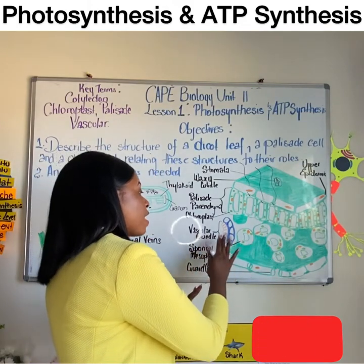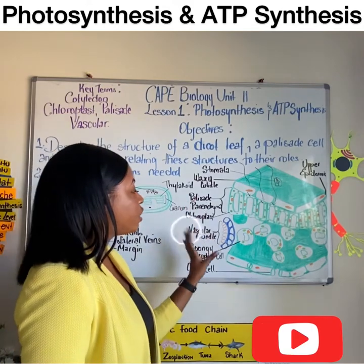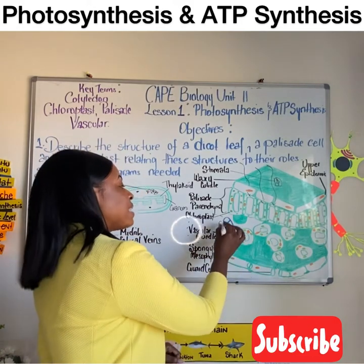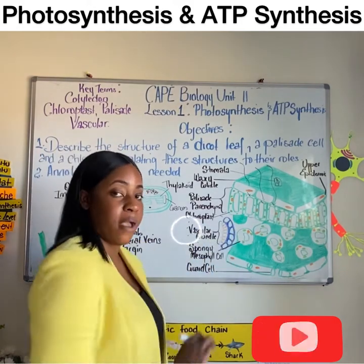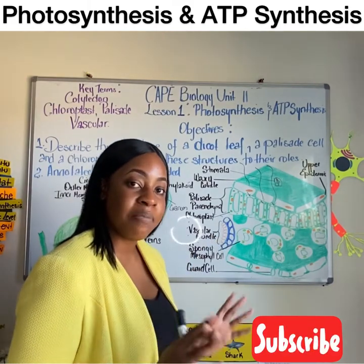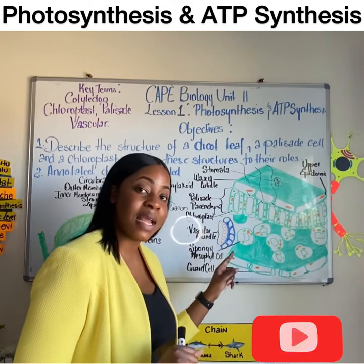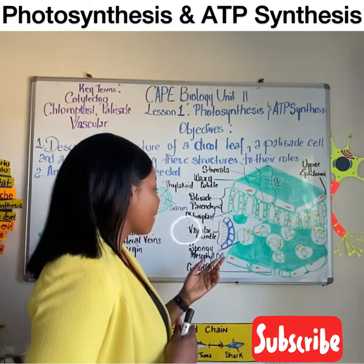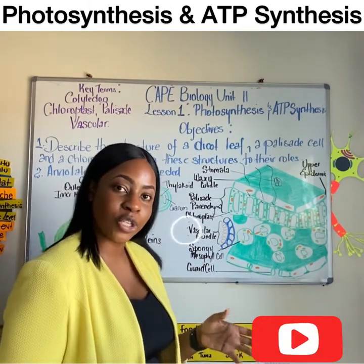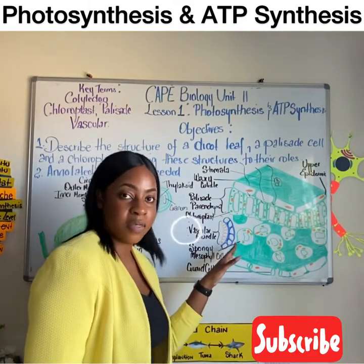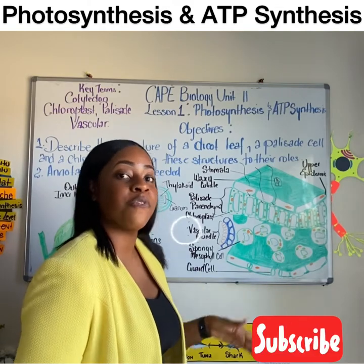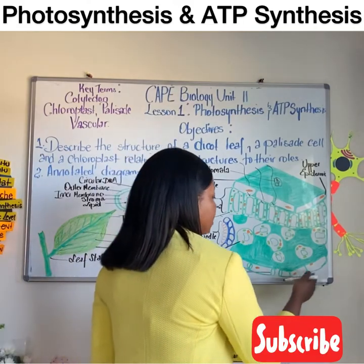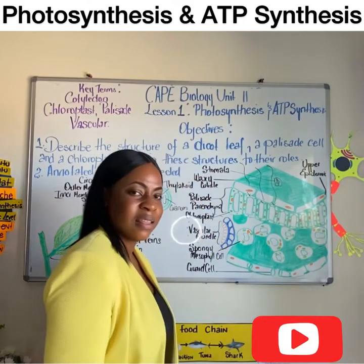The vascular bundles in dicot plants are arranged in a ring form, with xylem internal to the phloem. The xylem conducts water and mineral ions — water is needed as a reactant in photosynthesis, specifically for photolysis, and mineral ions are needed for plant growth and nutrition. The phloem conducts products of photosynthesis, which is glucose. Note that there are more stomata in the lower epidermis to promote the process of gaseous exchange.